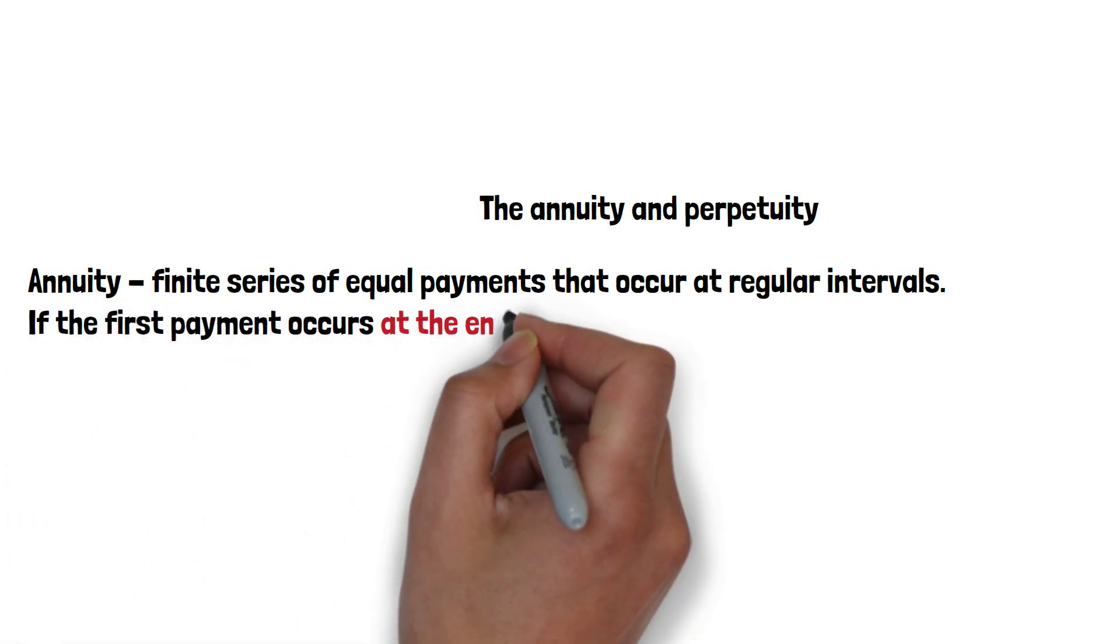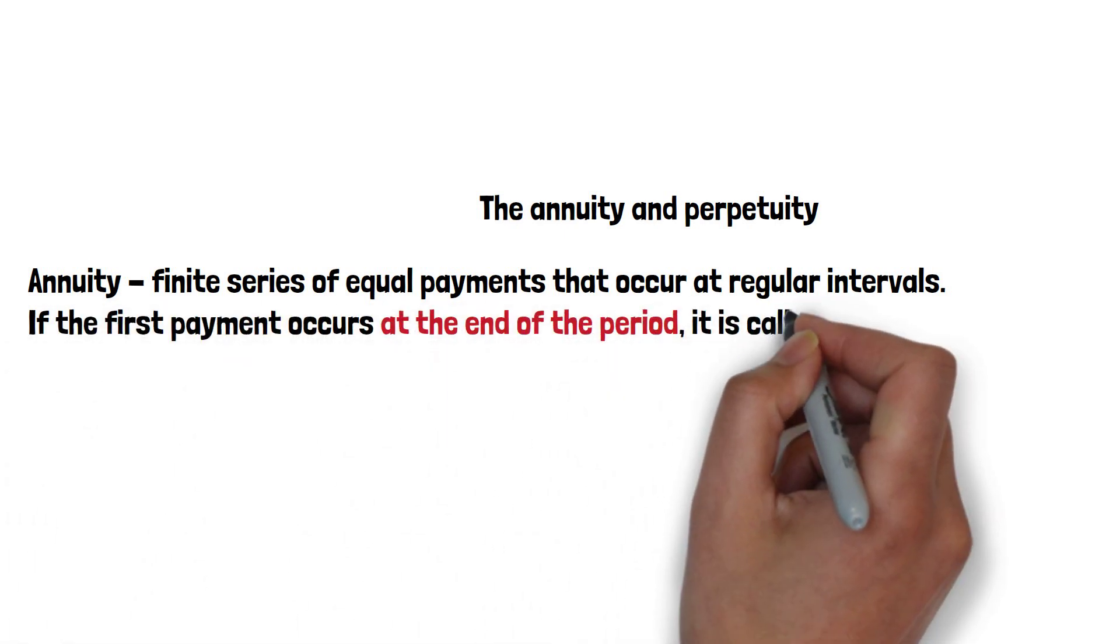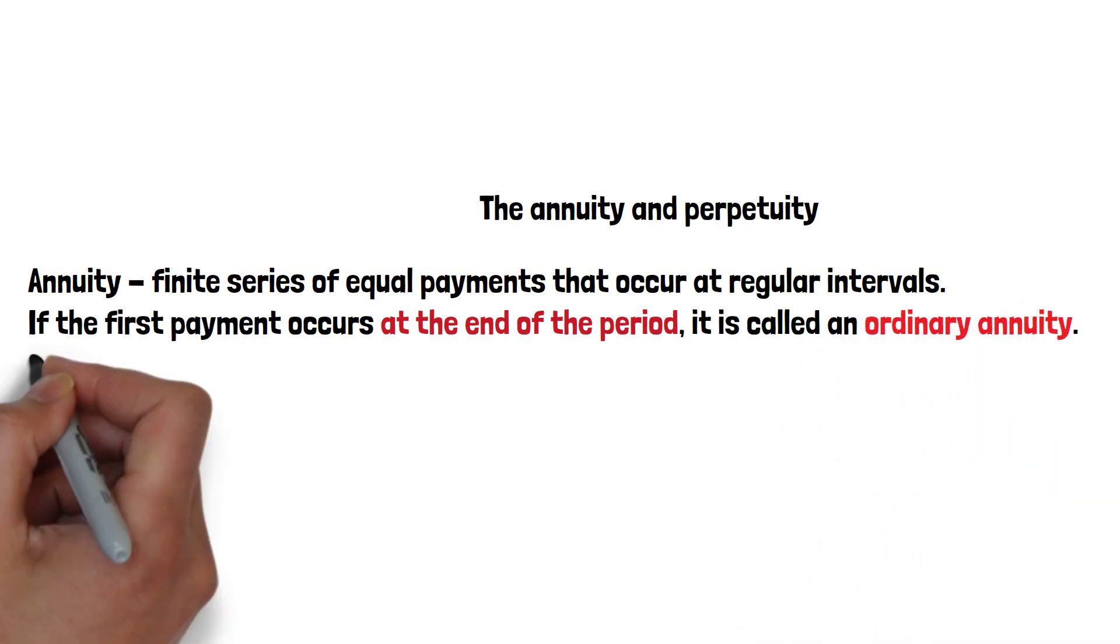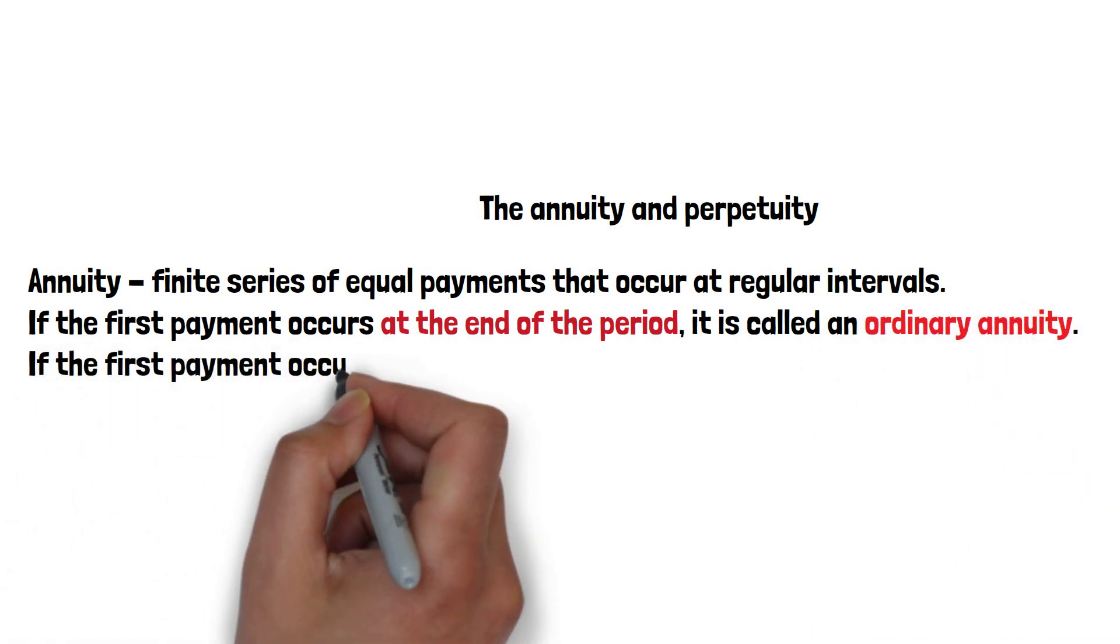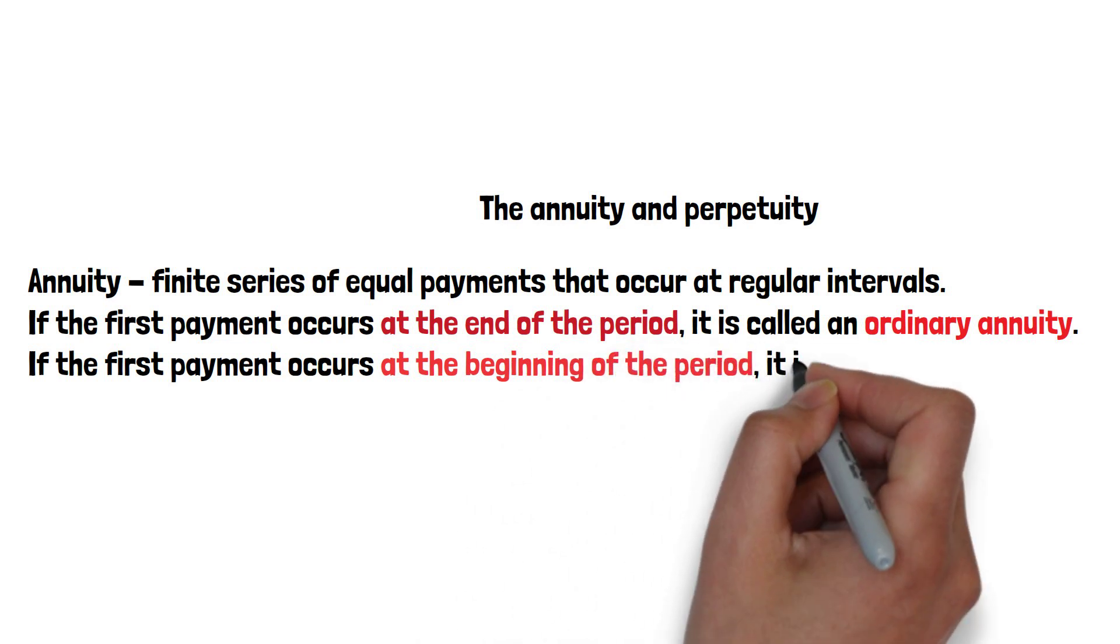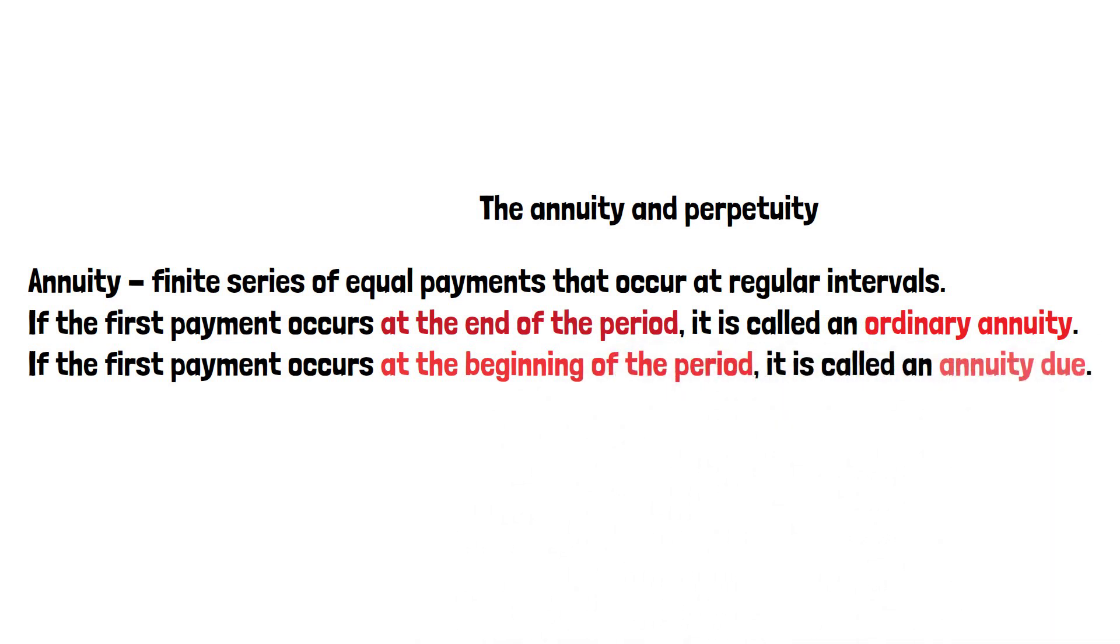If the first payment occurs at the end of the period, it's called ordinary annuity. If the first payment occurs at the beginning of the period, it is called an annuity due.